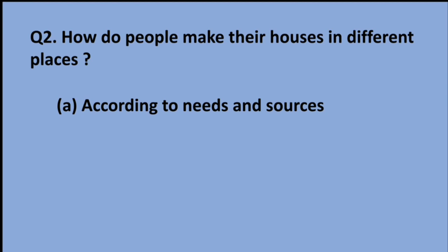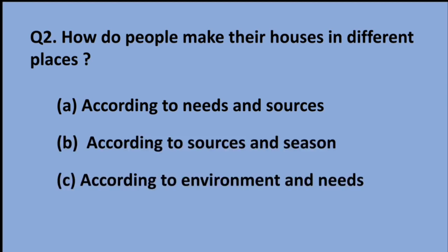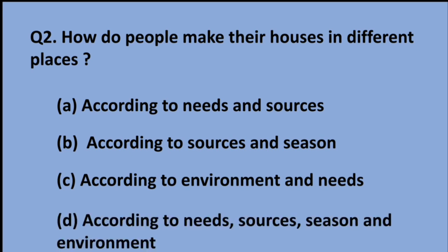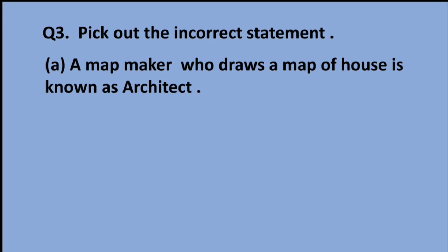Our next question is: how do people make their houses in different places? The options are: A) according to needs and sources, B) according to sources and season, C) according to environment and needs, or D) according to needs, sources, season, and environment. As we have read, people take care of many things while making houses, so the right option is D.